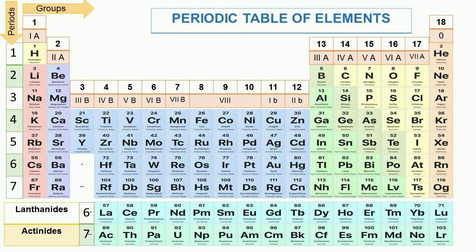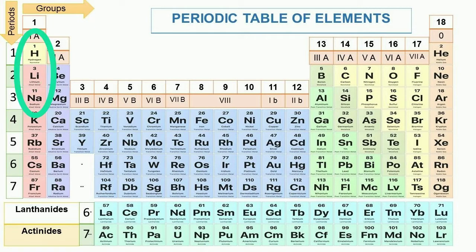This is the modern periodic table. You may see here that elements are arranged in order of increasing atomic number. Hydrogen with atomic number 1 and lithium with atomic number 3 have similar properties. Then after some elements, there comes sodium with properties similar to hydrogen and lithium. It shows that when elements are arranged in increasing order of their atomic numbers, the properties of elements are repeated — there is periodicity in properties of elements.